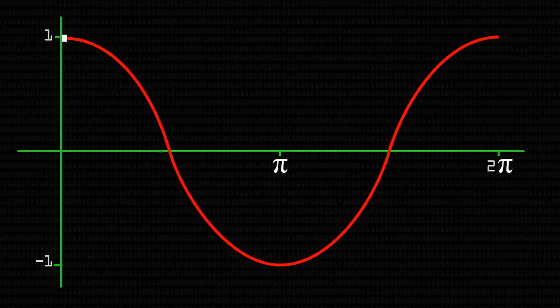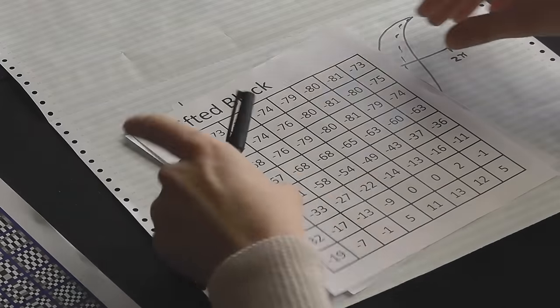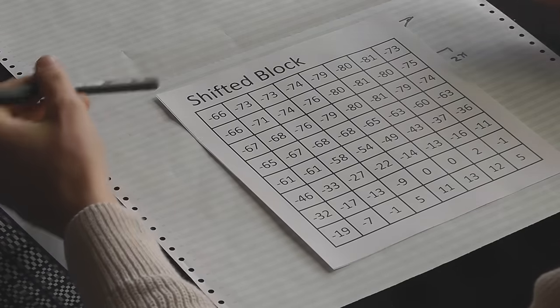We centre all these values around 0, because remember a cosine wave goes from 1 to minus 1, not from 1 to 0. So we take away 128 off every value and we get our shifted block like this. So this is the exact same image, but this time now centred around 0.